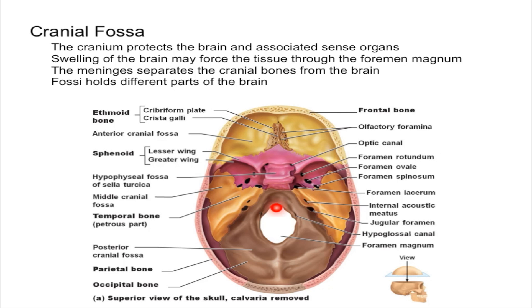The foramen magnum is actually where the spinal cord enters the brain. The different fossas hold different parts of the brain: the anterior fossa holds the frontal lobe, the middle cranial fossa holds the temporal lobe, and the posterior cranial fossa holds the cerebellum.